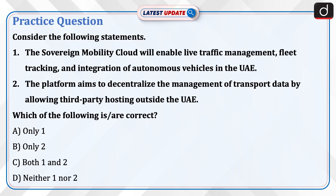Now it's time to do a practice question. Consider the following statements. One: The Sovereign Mobility Cloud will enable live traffic management, fleet tracking, and integration of autonomous vehicles in the UAE. Two: The platform aims to decentralize the management of transport data by allowing third-party hosting outside the UAE. Which of the following is correct? A: Only one. B: Only two. C: Both one and two. D: Neither one nor two.